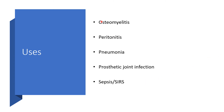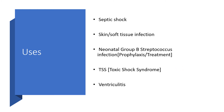Additional uses include osteomyelitis, peritonitis, pneumonia, septic arthritis, sepsis, and severe inflammatory response syndrome. However, vancomycin may not be the first agent in septic shock, skin or soft tissue infections, neonatal Group B Streptococcus infection (prophylaxis or treatment), or ventriculitis.